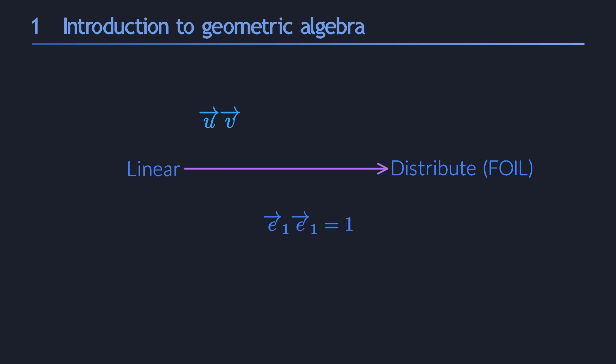More generally, whenever two vectors are parallel to each other, their product contracts to a real number. But when we multiply two different basis vectors, we get a new kind of object called a bivector.